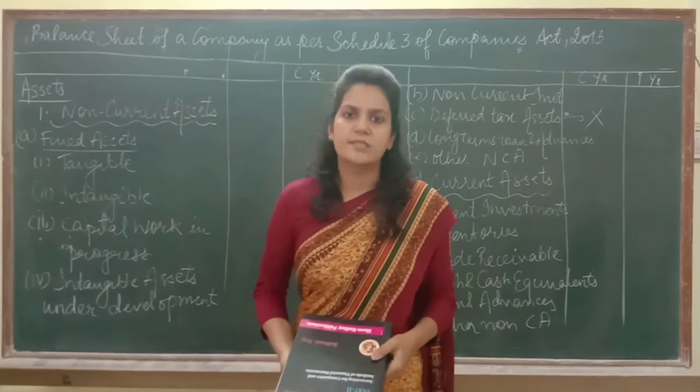Next are short-term loans and advances — if you have given a loan or advance to somebody for a period of less than 12 months, it comes under this head. Last is other current assets: examples include prepaid expenses, accrued incomes, and goodwill written off within 12 months. If goodwill is written off over more than 12 months, it would be classified differently.